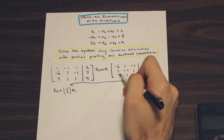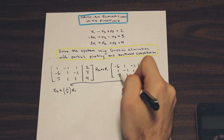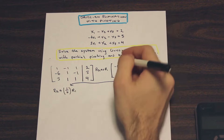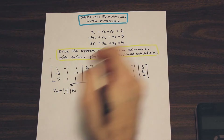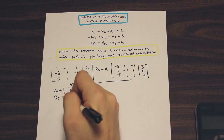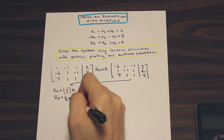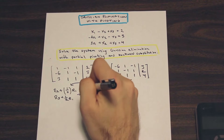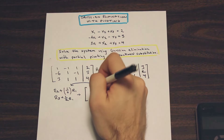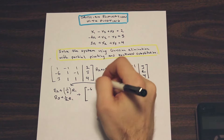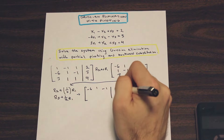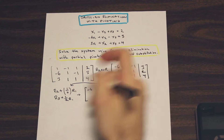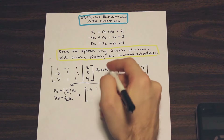Now let's look at the third term in the first column. We have 3 there, which is half of negative 6 and a negative. So we're going to add half of R1 — we write R3 plus 1/2 R1. I'm just going to write down the results for that. This is just to show you how to do these types of questions.